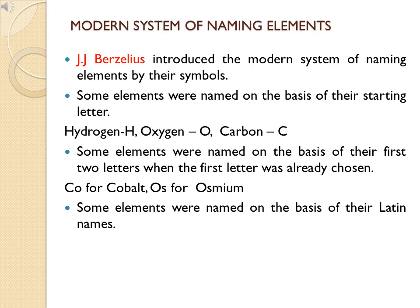The modern system of naming elements was introduced by J.J. Berzelius. There are certain rules to follow. Rule one: some elements are named based on their starting letter — for example, hydrogen has symbol H, oxygen has symbol O, carbon has symbol C. The first letter of the element's name is taken as its symbol.